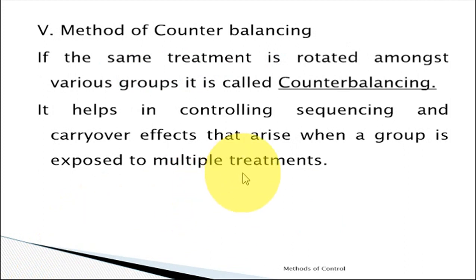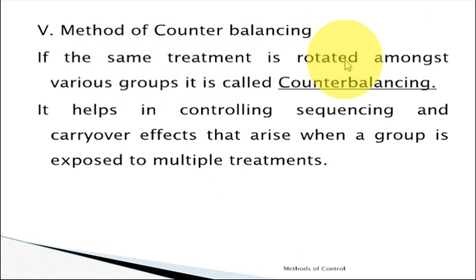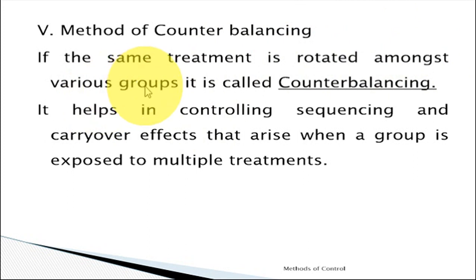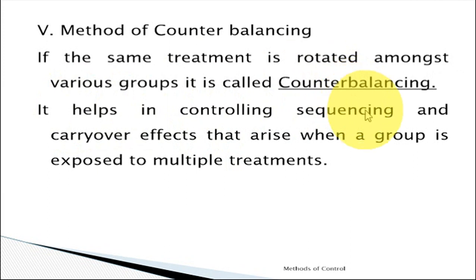The fifth method of control is counterbalancing. Based on the number of treatments, the same number of groups will be formed. For example, if there are two treatments — treatment one being teaching with technology and treatment two being teaching with the traditional method — these are rotated amongst the various groups. When rotated, the impact of one treatment is counterbalanced by the other. It helps in controlling sequencing or carryover effects that arise when a group is exposed to multiple treatments.